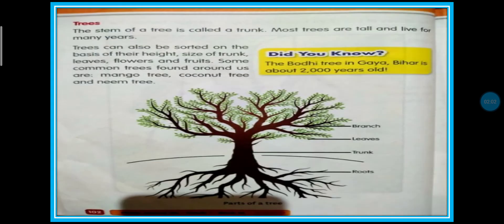Now students, tell me, how many parts does a tree have? Yes, there are four parts of a tree: Branch, leaves, trunk and roots. These are parts of a tree.